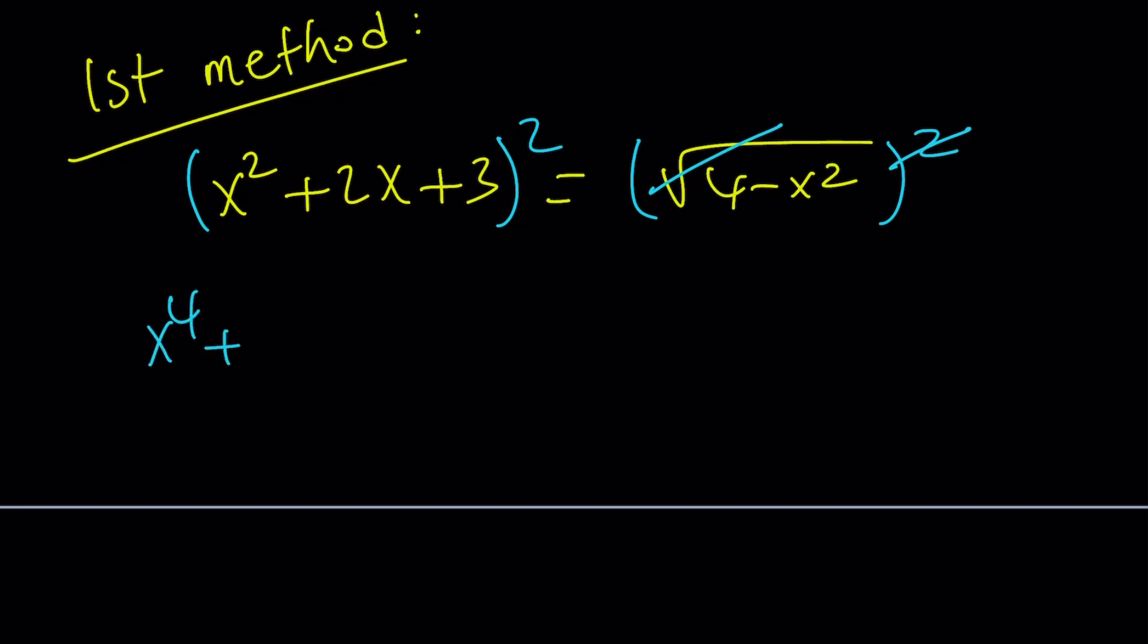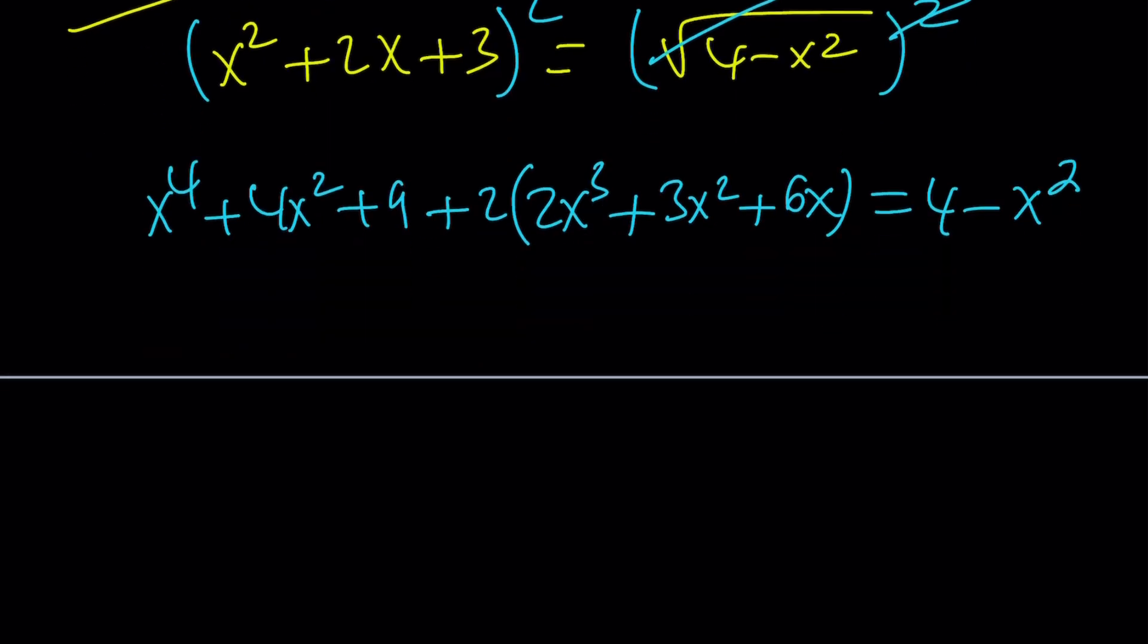So a squared, b squared, c squared. You can do it differently. Plus two times ab, 2x cubed, plus ac, which is 3x squared, plus bc, which is 6x. And I have 4 minus x squared on the right hand side because the square root disappeared.